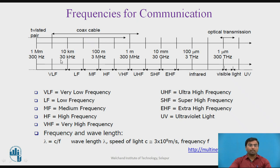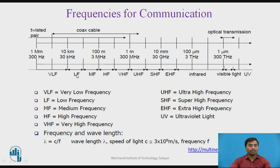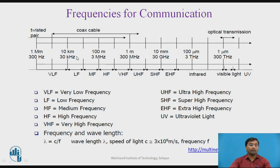For frequencies used in communication, this is a rough representation of frequency ranges from 300 hertz to 300 terahertz, classified into different classes: very low frequency, low frequency, medium frequency, high frequency, very high frequency, ultra high frequency, super high frequency, and extra high frequency. Beyond that range are infrared and UV rays. As frequency increases, wavelength decreases and vice versa, consistent with the formula relating speed of light, frequency, and wavelength.